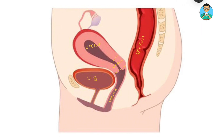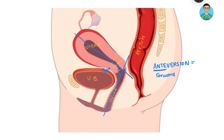Now let us talk about anteversion. The 'ante' word means anteriorly or forward. Version means the angle between the long axis of vagina with the long axis of uterus — this angle. And this angle is approximately 90 degrees. So anteversion angle is approximately 90 degrees. One easy way to remember is that V stands for vagina, so it is the angle of the uterine long axis with the vaginal long axis.